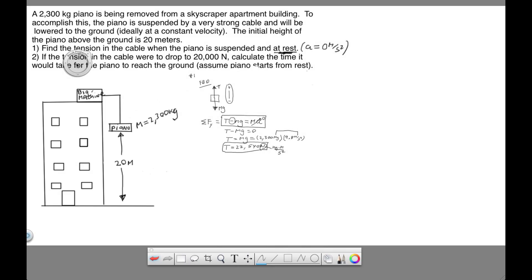In the second question, we're told that the tension drops from 22,540, that's when the piano was at rest just hanging here. So the tension in the cable drops from 22,000 to 20,000. So that's going to create an unbalanced force.